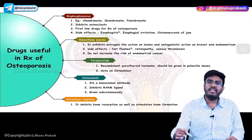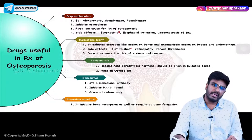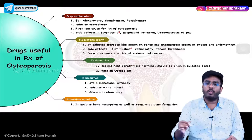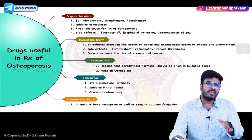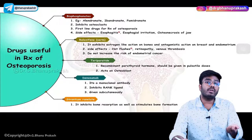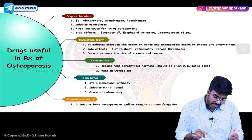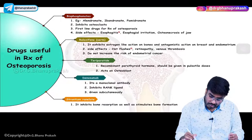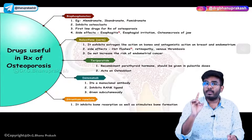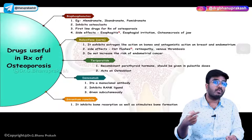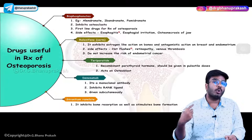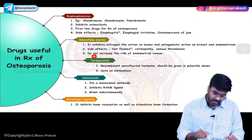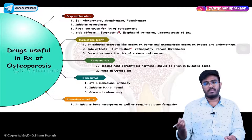Teriparatide is a recombinant parathyroid hormone. Normally PTH causes bone resorption and increases blood calcium, so why use it for osteoporosis? The concept is that when teriparatide is given in pulsatile doses, as taught earlier, PTH in pulsatile doses stimulates osteoblasts and helps in bone formation. PTH in high continuous doses activates osteoclasts causing bone resorption, but teriparatide given in pulsatile doses stimulates osteoblasts and helps in bone formation to treat osteoporosis.